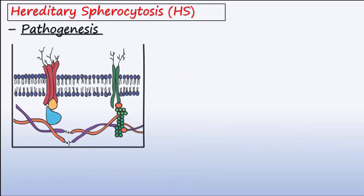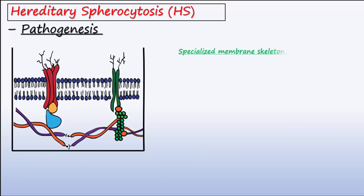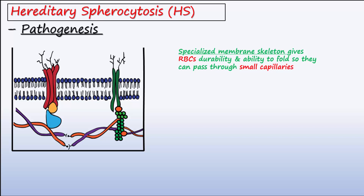Its specialized membrane skeleton gives RBCs durability and the capacity to fold, which is necessary in order to pass through very small capillaries. The specialized RBC membrane is made up of spectrin that consists of alpha and beta chains, which intertwine to form helical dimers. Spectrin interacts with ankyrin and band 4.2, which in turn bind to the transmembrane ion transporter, band 3. Spectrin also interacts with actin and protein 4.1, which binds to the transmembrane protein glycophorin A.